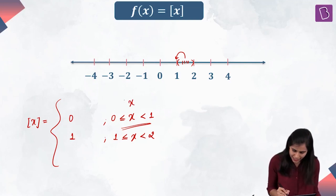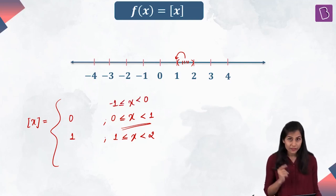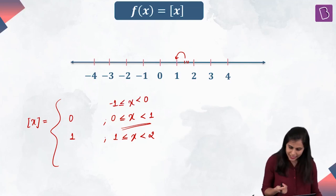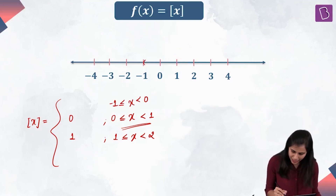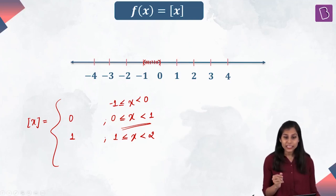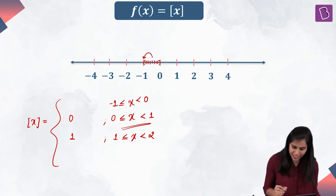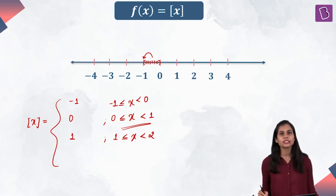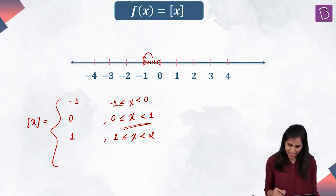What about when x is greater than or equal to minus 1 and strictly less than 0? When x is minus 1, bracket x is minus 1. When x is strictly sandwiched between minus 1 and 0, the integer lying on the immediate left is minus 1. That means throughout this interval, bracket x is minus 1.